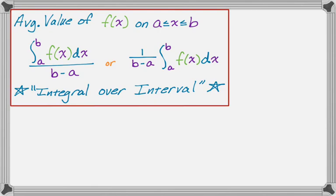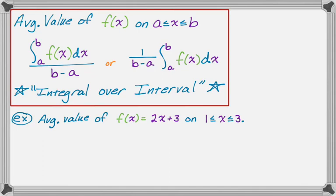Let's do an example problem. This is a very straightforward example - we want to find the average value of f(x) = 2x + 3 on the interval from 1 to 3. This is kind of just an excuse to use the fundamental theorem of calculus. So it's the integral from 1 to 3 of (2x + 3)dx over 3 minus 1.